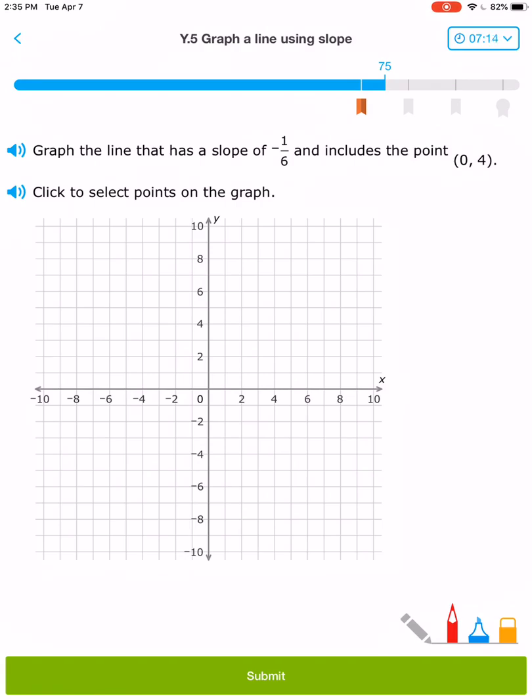(0, 4). 0 in my x, 4 for my y. A slope of -1/6 tells me to go down 1 and over 6. 1, 2, 3, 4, 5, 6. Those are my two points.